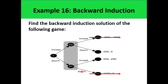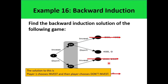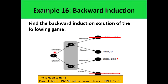After analyzing the sub-games, we look at the next bigger sub-game — the whole diagram. If player 1 chooses to invest, the payoff is 400. While if player 1 chooses not to invest, the payoff is 200. So player 1 would choose to invest, and that arm of the tree will be erased. The solution of the game is: player 1 chooses to invest, while player 2 chooses don't invest.